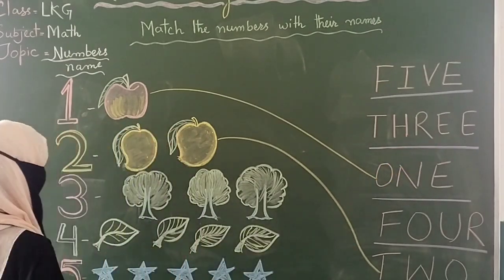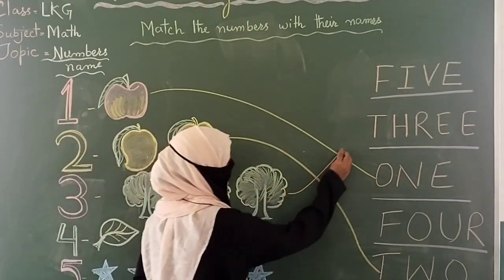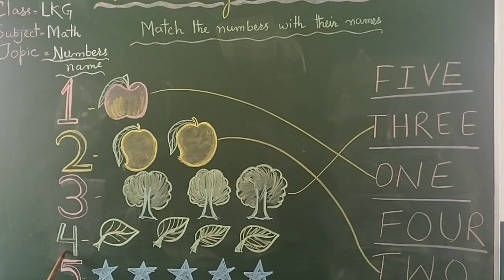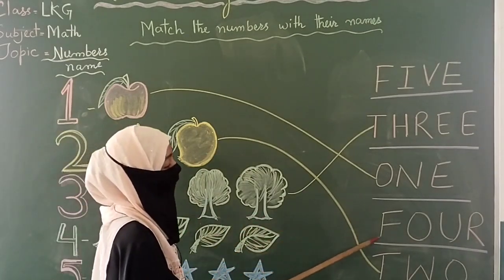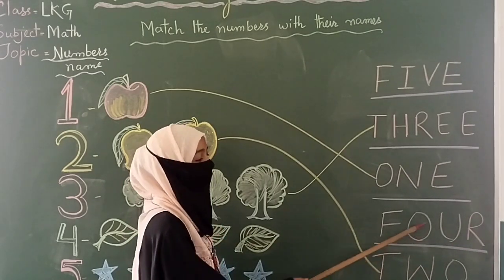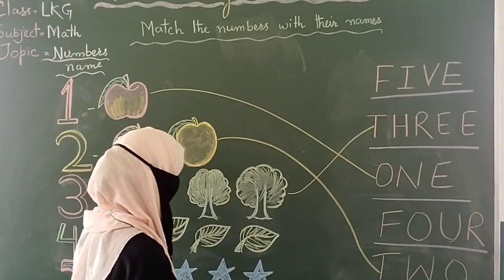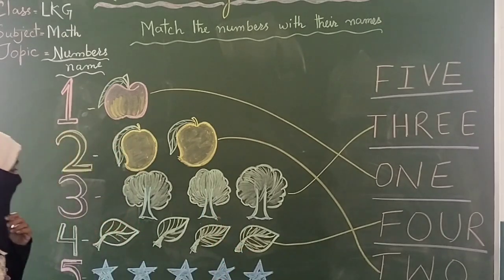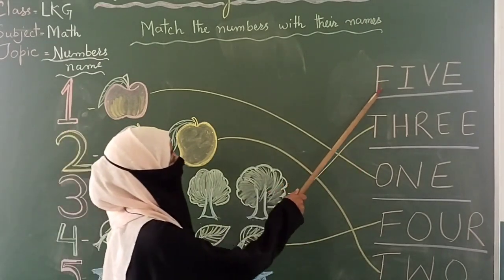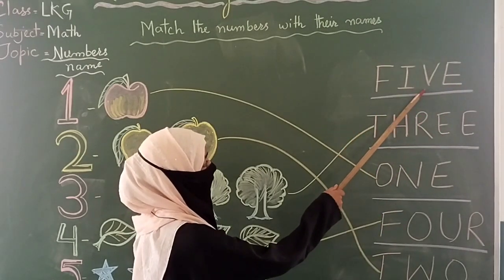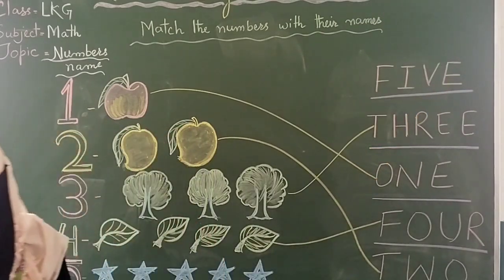Next one is four. Where is four? It's here: F-O-U-R, four. Now match it. There's only one left — it's five. What is the spelling of five? It's here: F-I-V-E, five. F-I-V-E, five. Now match it.